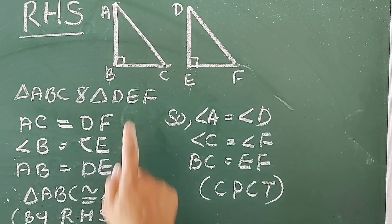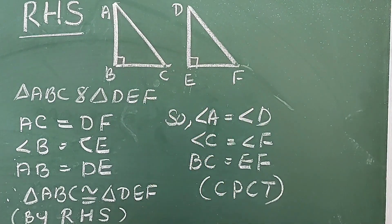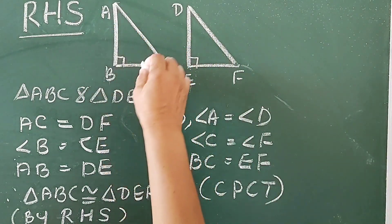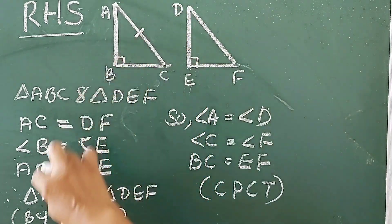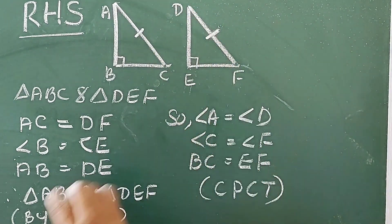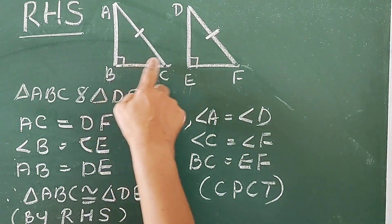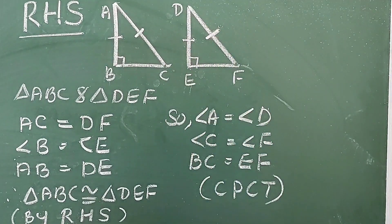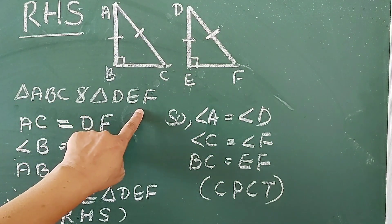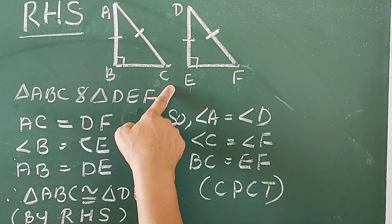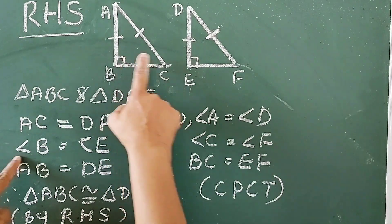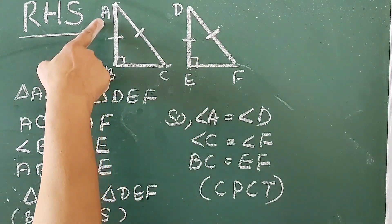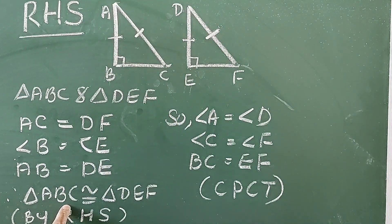Let us consider two triangles: triangle ABC and triangle DEF. It is given: side AC (the hypotenuse) is equal to side DF; angle B equals 90 degrees; angle E also equals 90 degrees; side AB equal to side DE. From the figures: AC equal to DF, angle B equal to angle E, side AB equal to DE. Therefore, triangle ABC is congruent to triangle DEF by RHS.